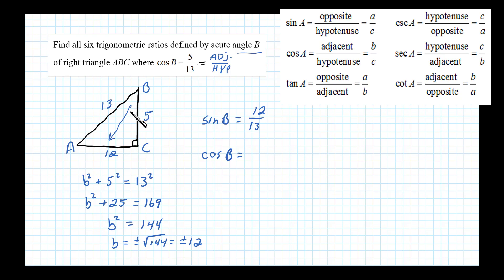Now cosine of B was given - it was given to be 5/13. You can see here the adjacent side is 5 and the hypotenuse is 13. Tangent of angle B is defined to be opposite over adjacent, so in this case 12/5.